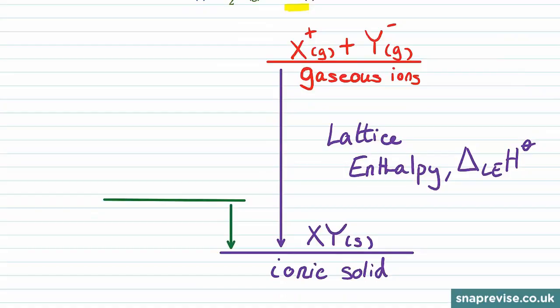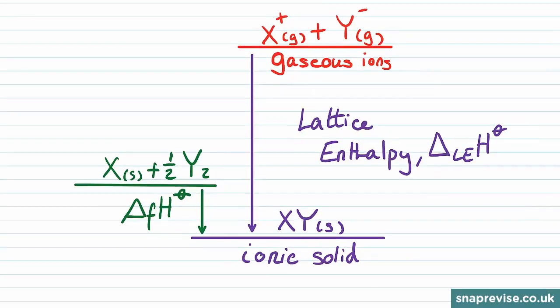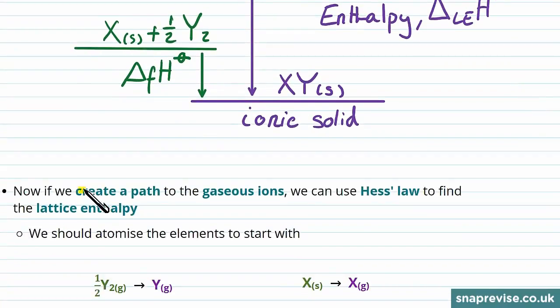This is usually much smaller than the lattice enthalpy, so it's shown by this much smaller drop in energy here, which we can label the change in enthalpy for formation. And then on the line we write in the species we're interested in. So in this case that's solid X plus half a mole of diatomic Y.